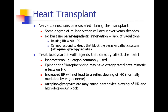To treat bradycardia in heart transplant patients, you need agents that directly affect the heart — drugs like isoproterenol, which is a direct beta agonist, or glucagon. Epinephrine and norepinephrine may have an exaggerated beta effect because there's no vagal tone. These patients will also not have the normal reflex slowing of heart rate when blood pressure rises, since that's mediated by the vagus nerve. Giving atropine or glycopyrrolate to these patients can actually cause paradoxic slowing of the heart rate or AV block, so these drugs are often avoided in heart transplant patients.